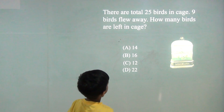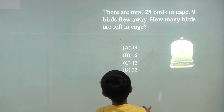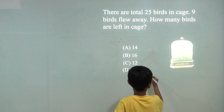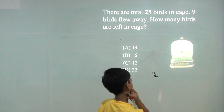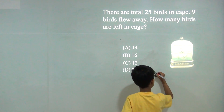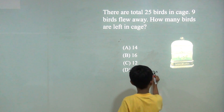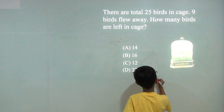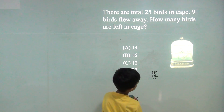There are a total of 25 birds in a cage and 9 birds flew away. How many birds are left in the cage? 25 minus 9. We will have to borrow. So 2 becomes 1 and 5 becomes 15. 15 minus 9 is 6. 1 minus 0 is 1. So the answer would be 16.